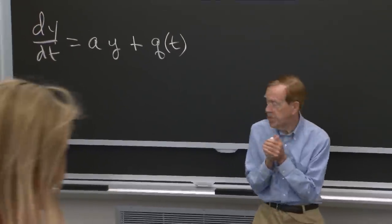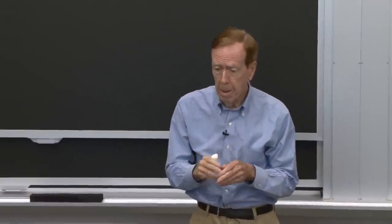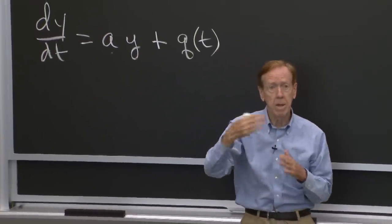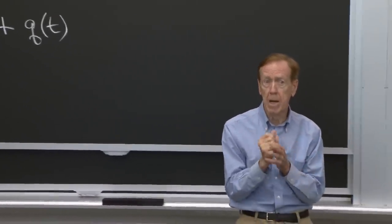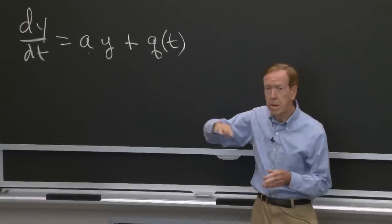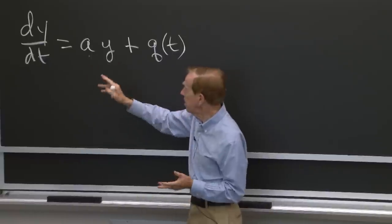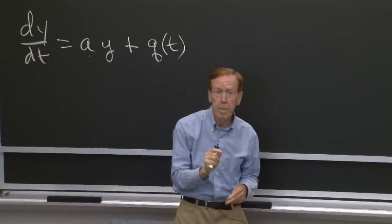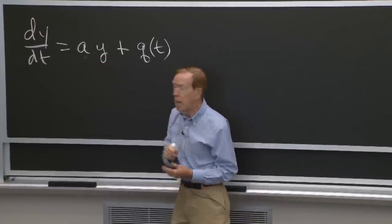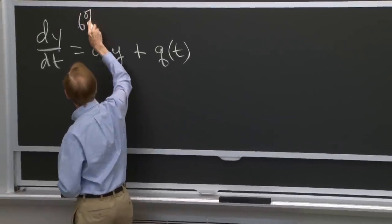This is a model problem. It's linear. I chose it to have constant coefficient a. Let me check the units — always good to see the units in a problem. Think of y as the money in a bank, our bank balance, so y is in dollars, and t is time in years. The rate of change has units of dollars per year, so every term in the equation has to have the right units. The interest rate a is percent per year — say 6% a year, that's dimensionless per year. Or half a percent per month if we change units.